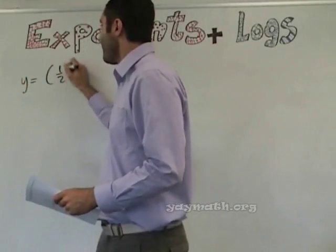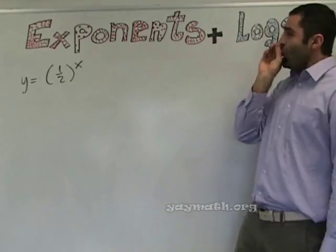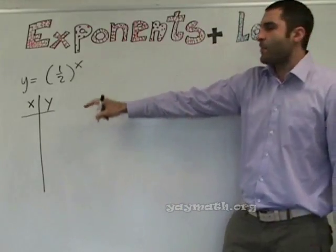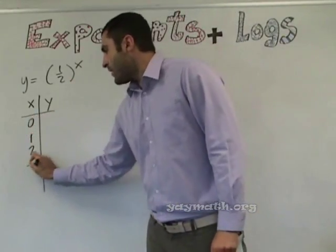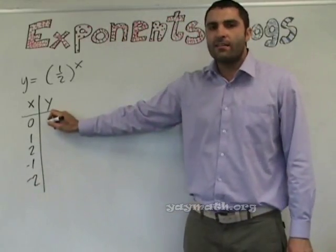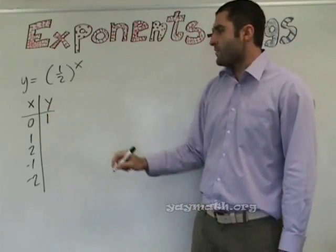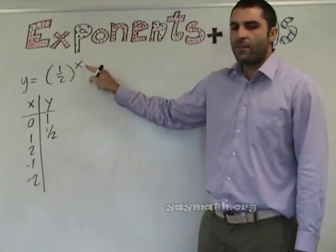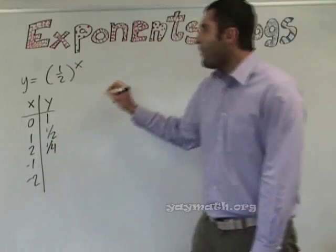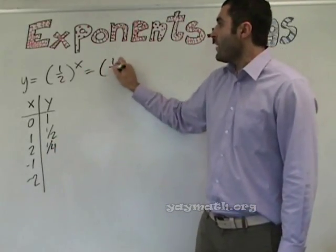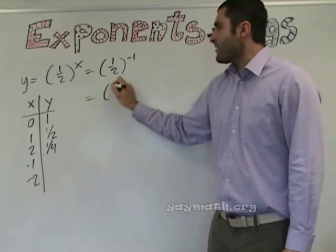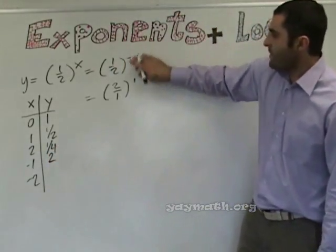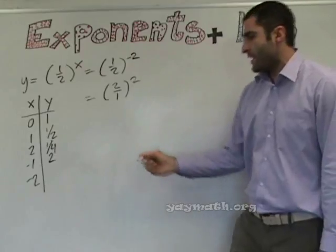Y equals one half to the X. This is an exponential graph because X is an exponent. We can plug in some numbers — zero, one, two, negative one, negative two. When X is zero, Y is one — anything to the zero is one. One half to the first is one half. One half squared is one fourth. One half to the negative one is two, because it flips to two over one. And negative two gives us four.